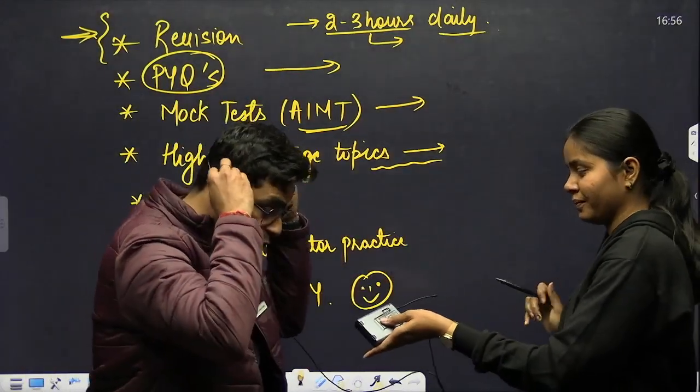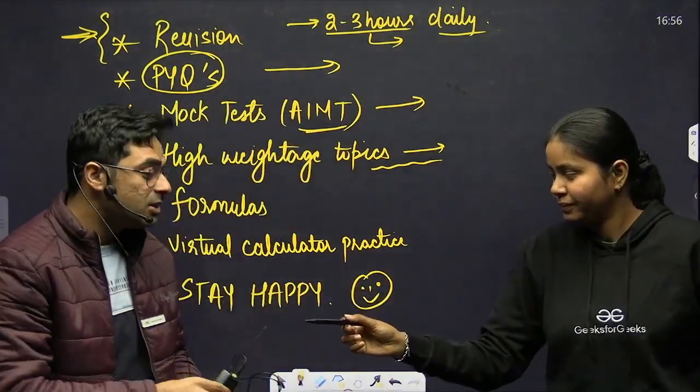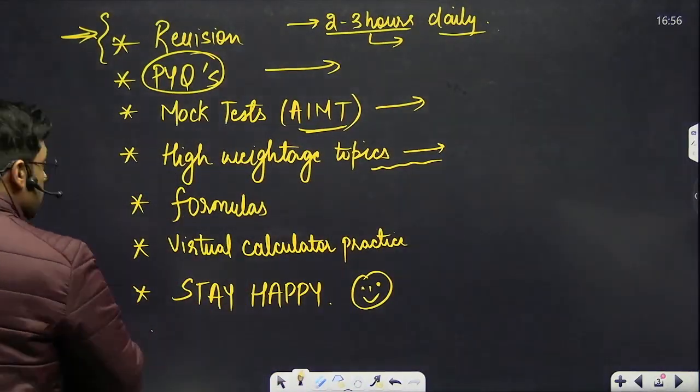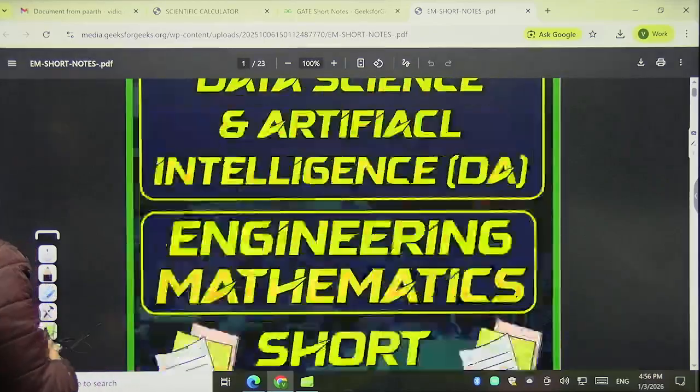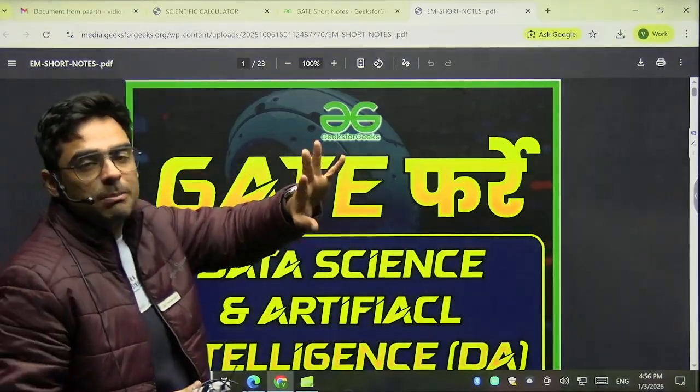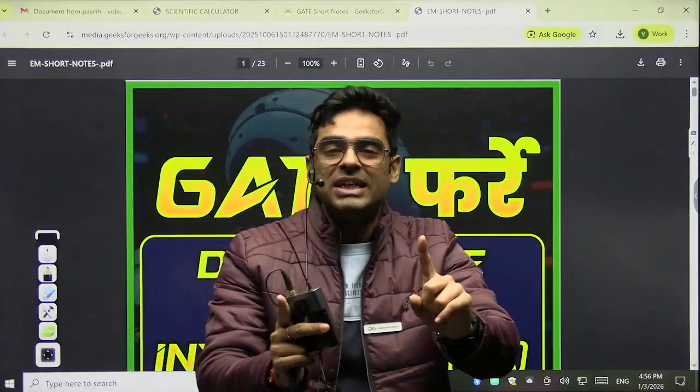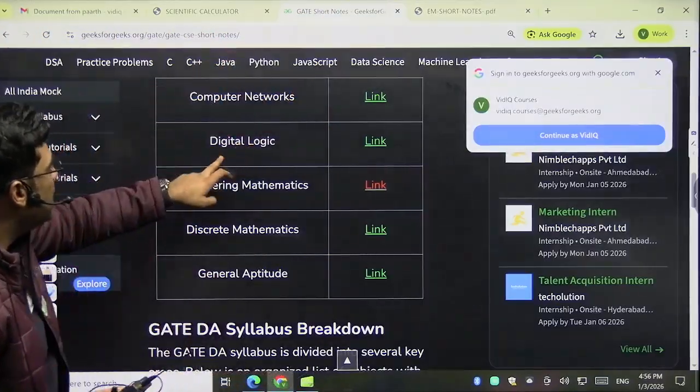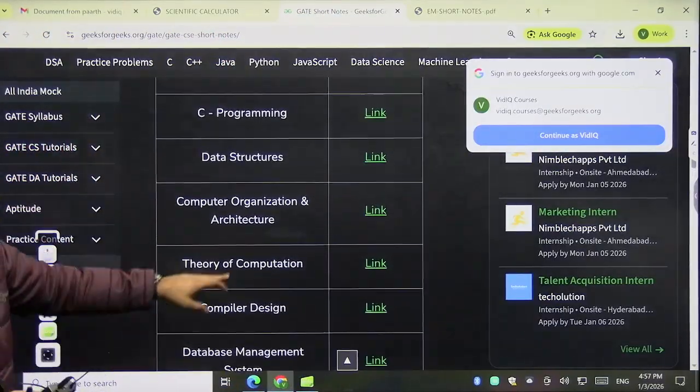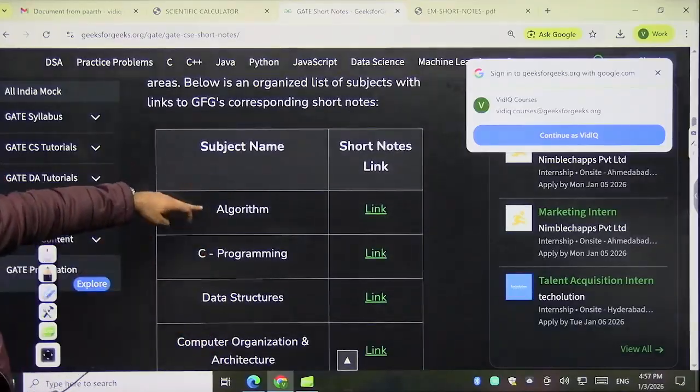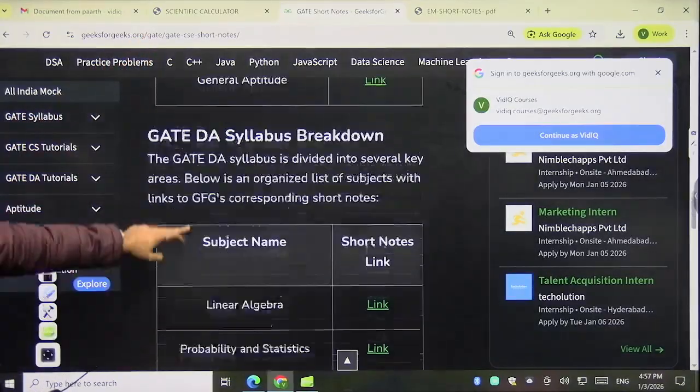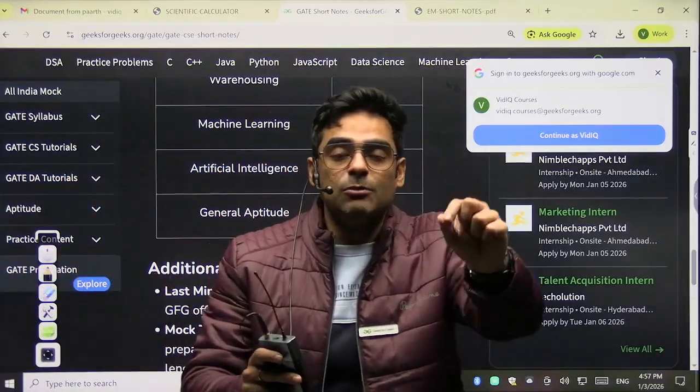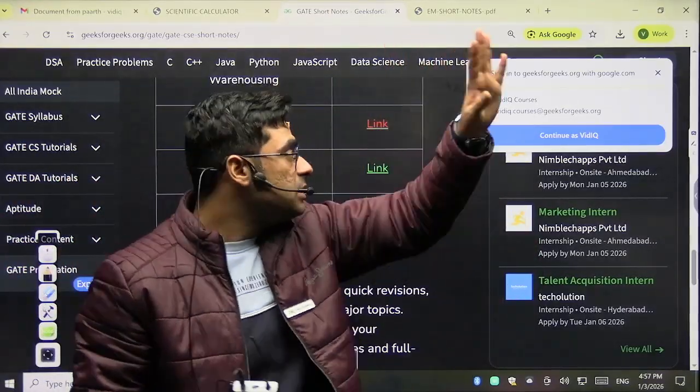Thank you. Now let's focus on formulas. We have formula sheets - the GFG platform has taken this initiative for each and every subject. You can just go to the GFG site and here we have links for every subject, starting from Algorithms and yes, we have this for DA as well, till General Aptitude.